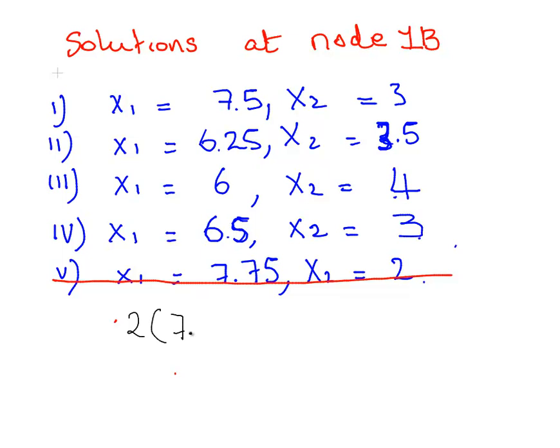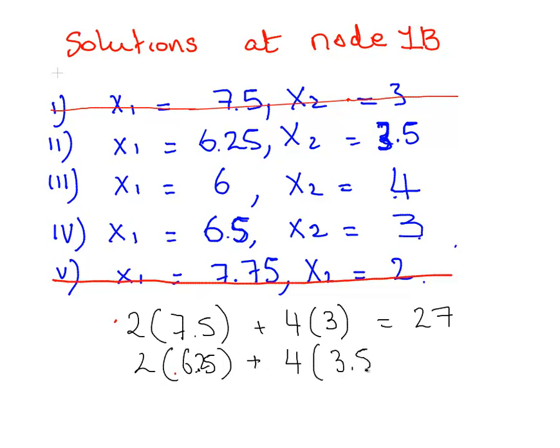We're looking at 2x1 plus 4x2 is less than 25. 2 times 7.5 plus 4 times 3, that's 27, so we can rule that one out. 2 times 6.25, that's 12.5, plus 4 times 3.5, that's 14, so 26.5, that's too high as well. 2 times 6 plus 4 times 4, that's definitely too high, that's 28.